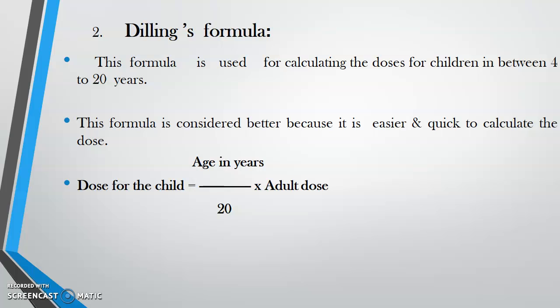This formula — Dilling's formula — is used for calculating the dose of children between 2 to 20 years.